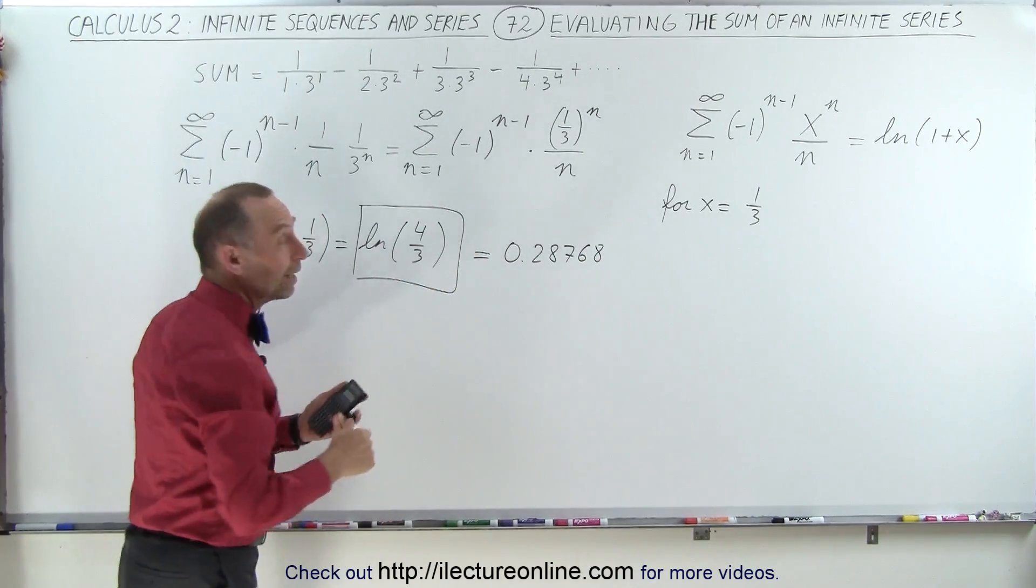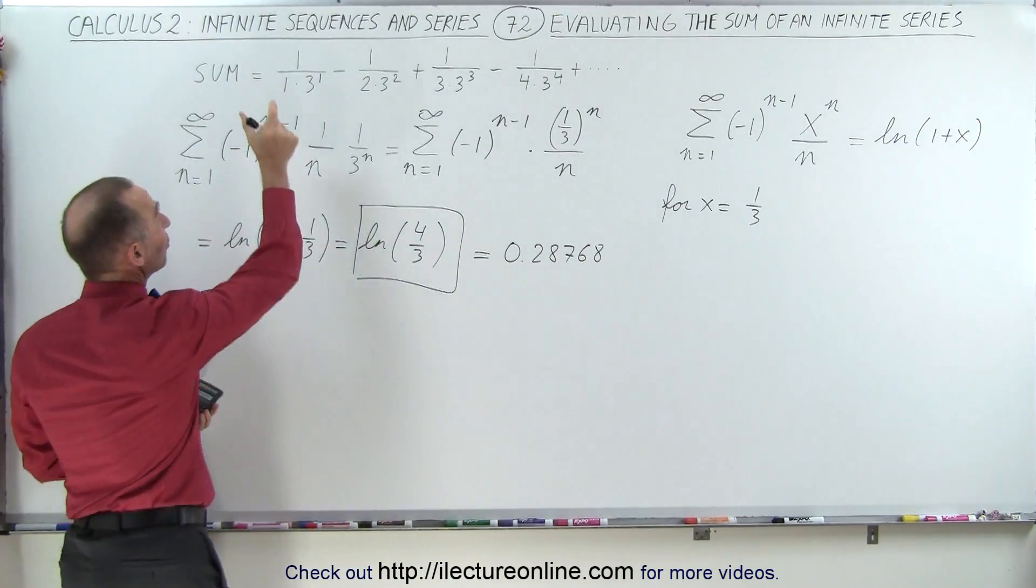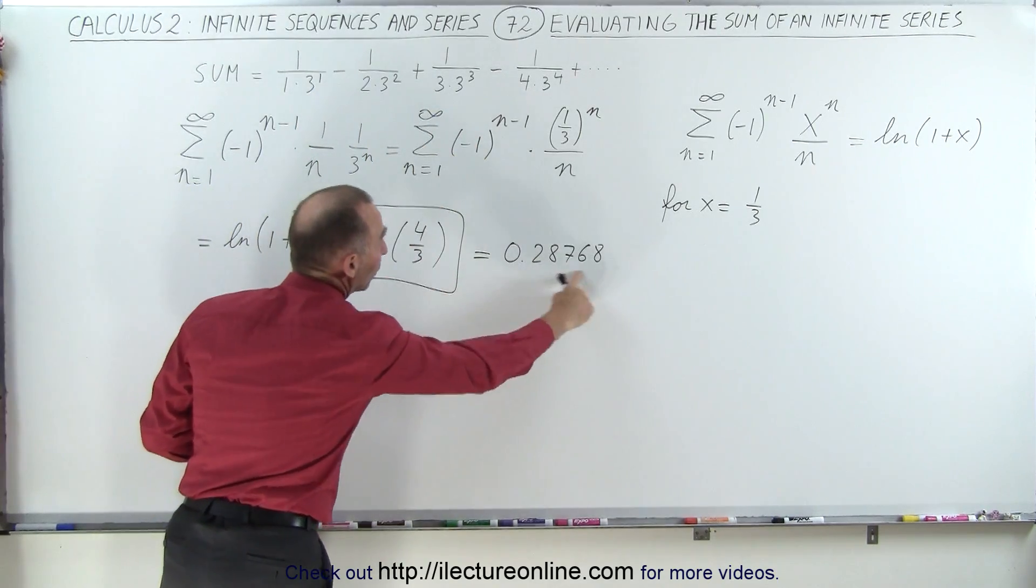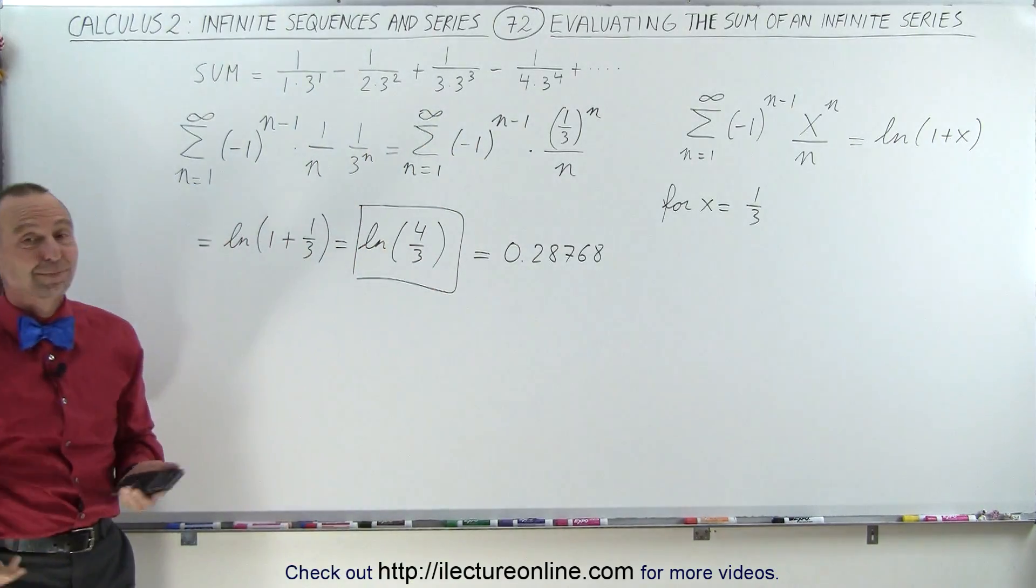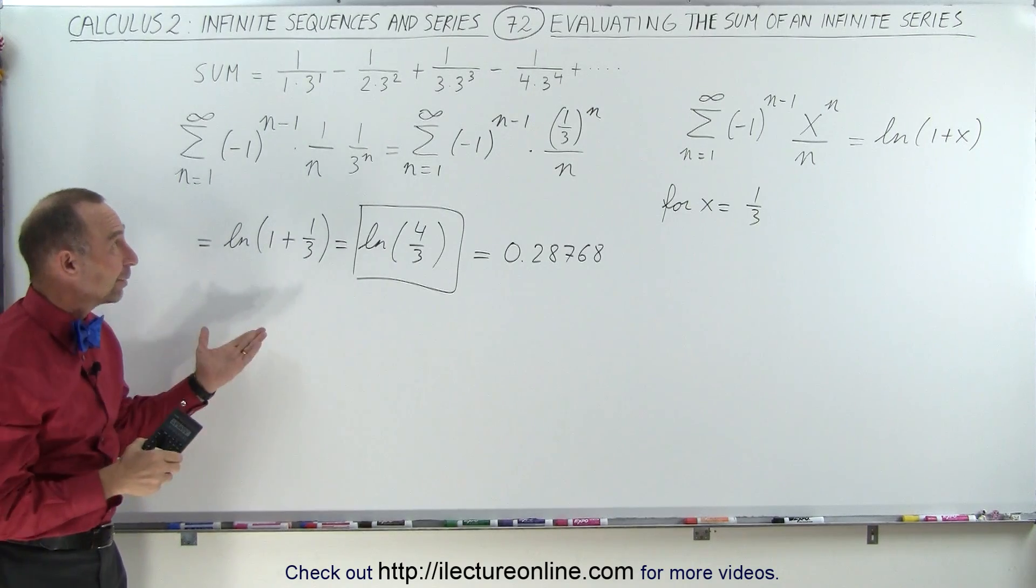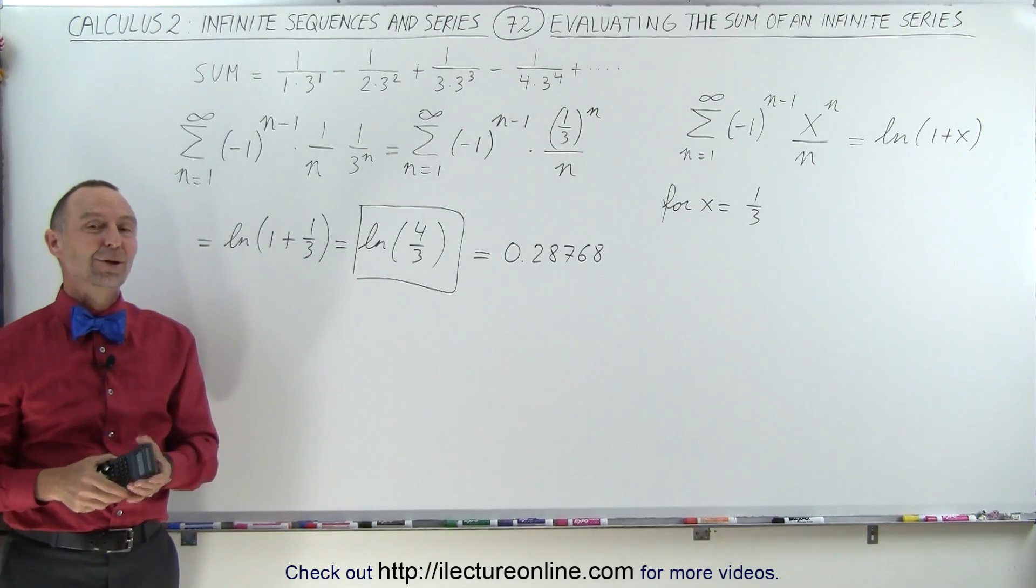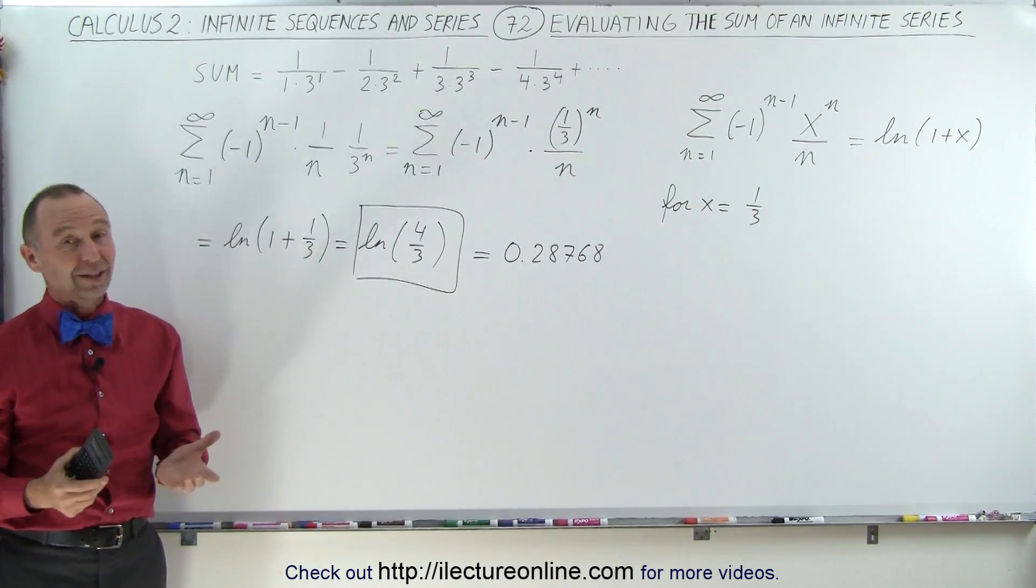And if we were to go ahead and evaluate this infinite sum, and we just keep adding every one of these terms together, eventually we'll get something that looks like that. And that's one way in which you can evaluate an infinite sum like that using the Maclaurin series. And that's how it's done.